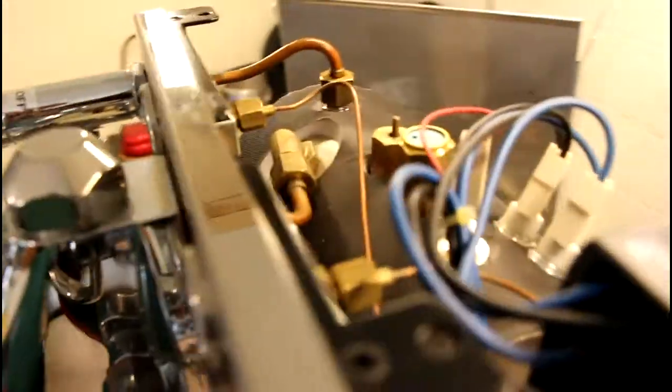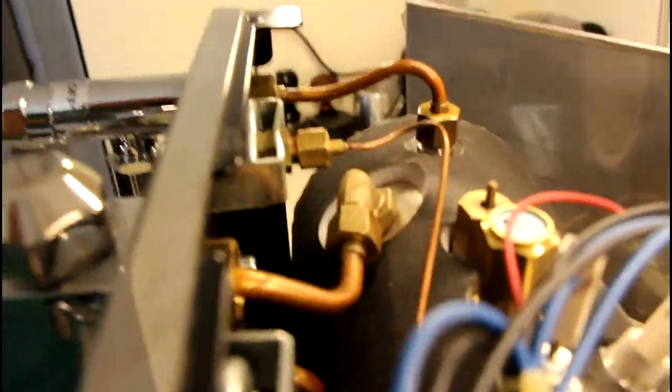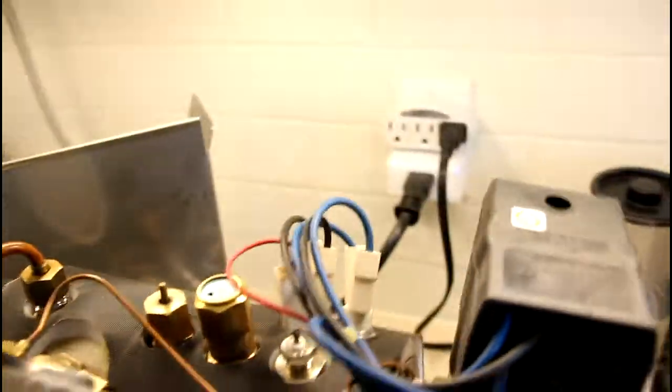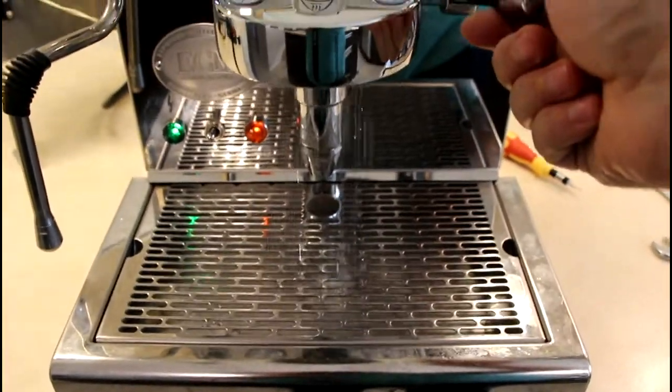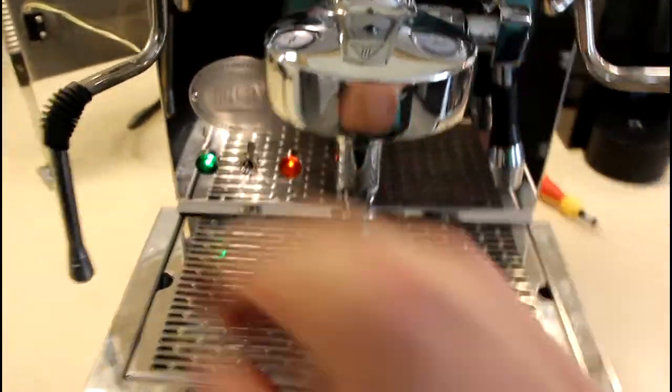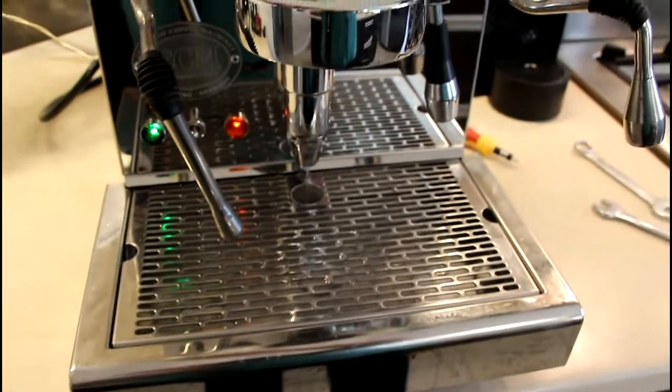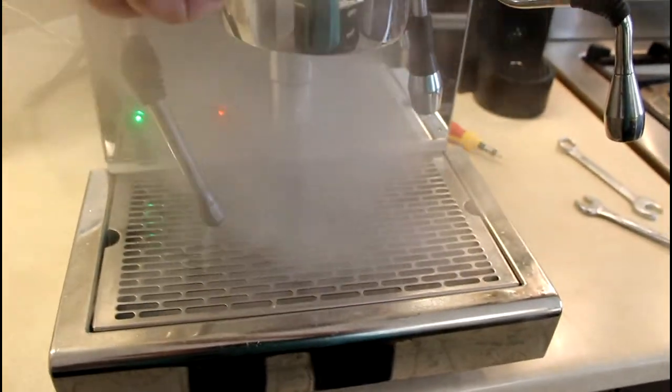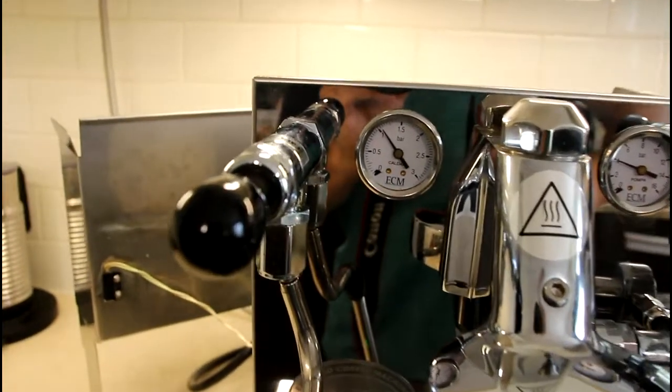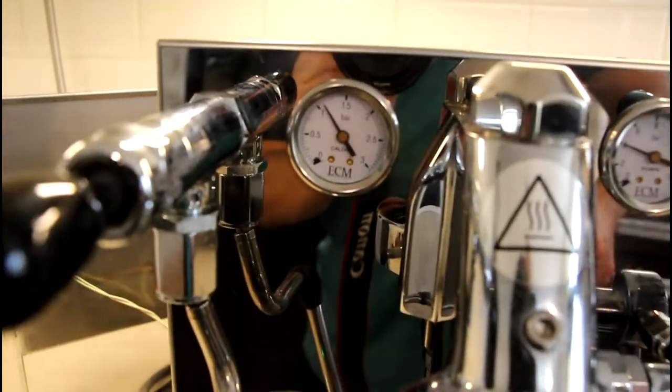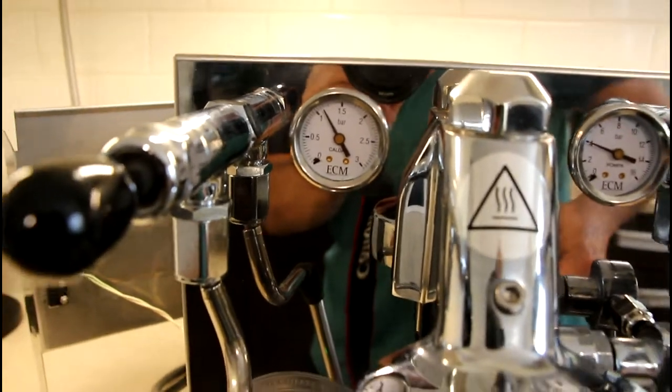And no leakage here, and no leakage here. Perfect. So I can turn it off. Let's check how it all works. Water comes from here. Steam is going out of there. Steam pressure is restoring fine. Perfect.